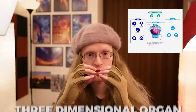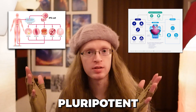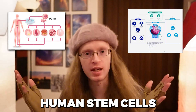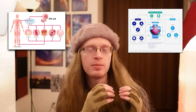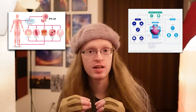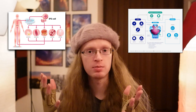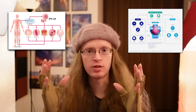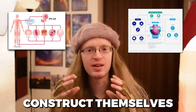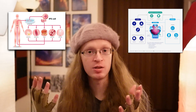Specifically, an organoid is a three-dimensional organ made of tissue grown from pluripotent human stem cells — the type of cell that can produce any other cell. You start with the stem cells, get them to produce brain cells, and have those construct themselves in 3D the way they would inside a human.